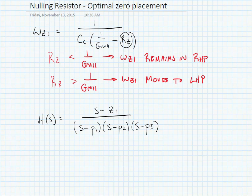This was our case after adding the nulling resistor. Note that this zero can be in the left half plane or the right half plane, so I'm going to put an s plus or minus z1 here. In general, we're going to say that p1 is at a lower frequency than p2 is at a lower frequency than p3.